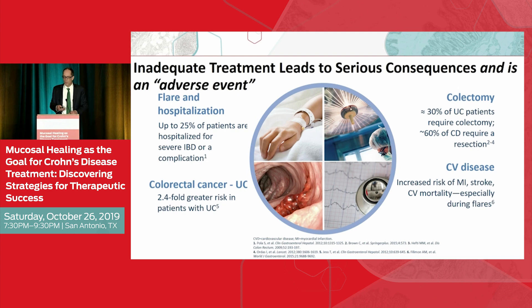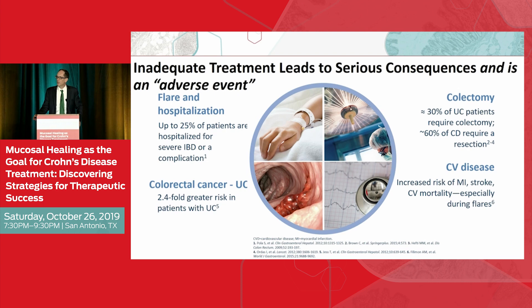From a health economic standpoint, undertreatment leads to flares, hospitalizations, and in ulcerative colitis, cancer and surgery. Patients with a large inflammatory burden in Crohn's — multiple segments: jejunum, ileum, colon — have higher risks for clots. We talk about clots a lot in terms of treatment side effects, but we can't forget that inflammation itself is a risk factor for clot. When we admit patients with extensive inflammation, especially in Crohn's, we should probably be using low molecular weight heparin or some type of preventative anticoagulant.